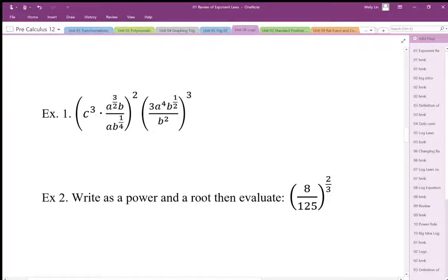So I get c to the power 6 in the numerator. I get a to the power 3 root—the square root squared, that's going to undo each other—so I get power 3, b squared.